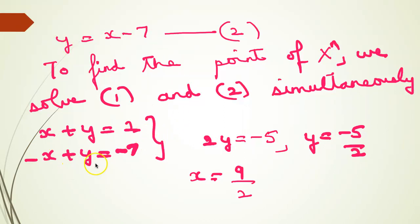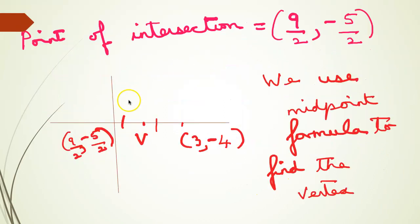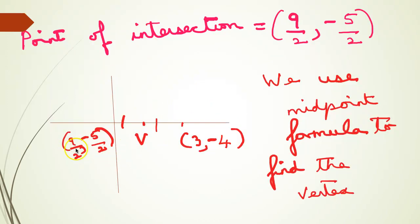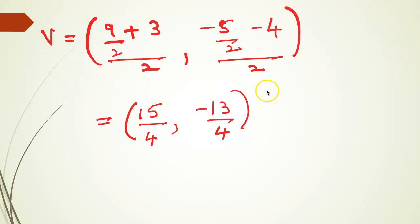The equation of the axis gives -x + y = -7. Using simultaneous equations, adding both: 2y = -5, so y = -5/2 and x = 9/2. The point of intersection is (9/2, -5/2). Now using the midpoint formula — (x₁ + x₂)/2, (y₁ + y₂)/2 — between (9/2, -5/2) and the focus (3, -4): the vertex is ((9/2 + 3)/2, (-5/2 + (-4))/2) = (15/4, -13/4).